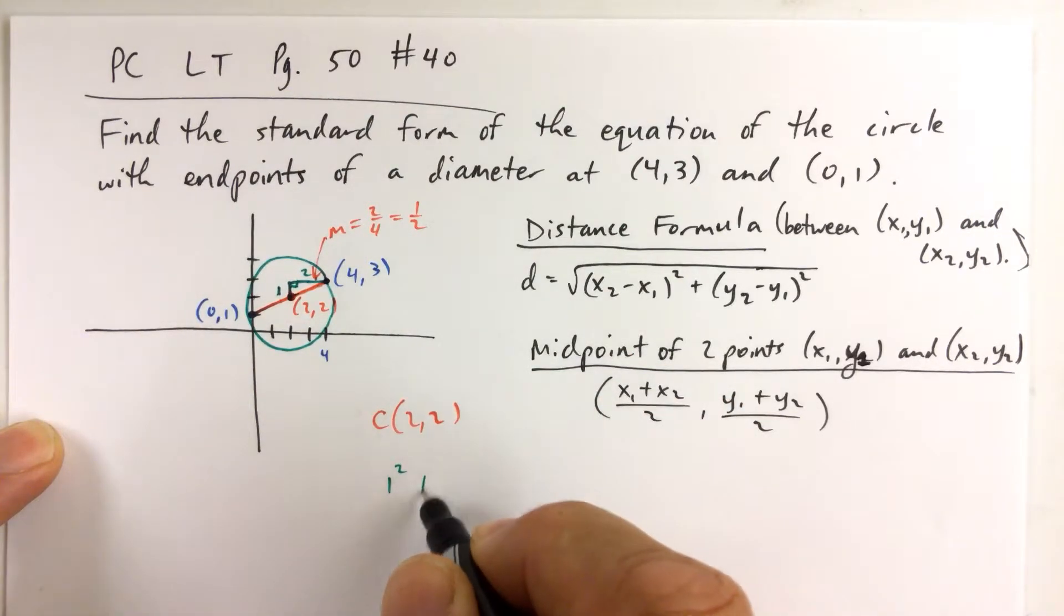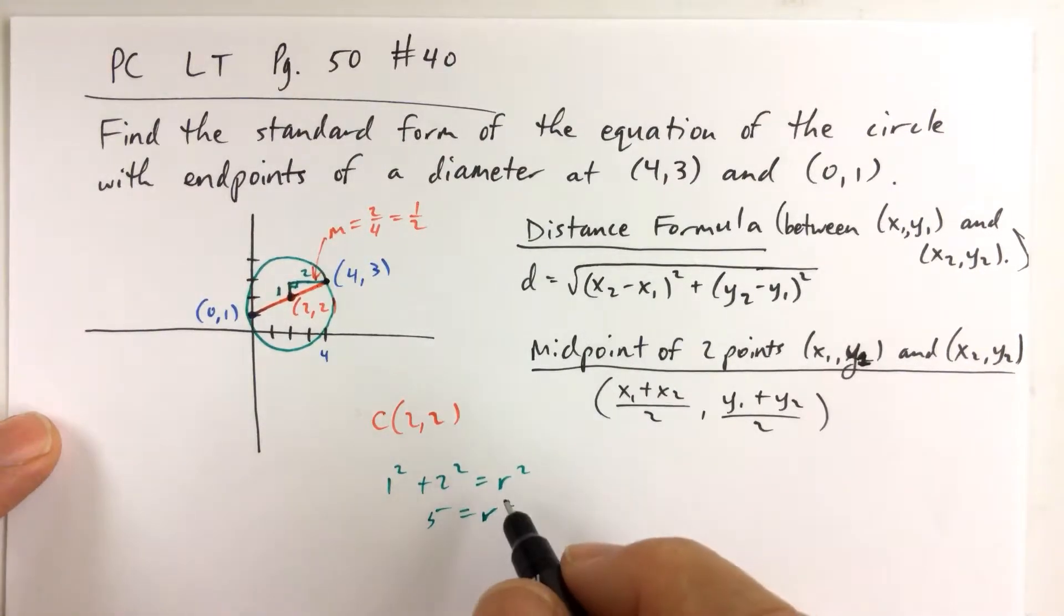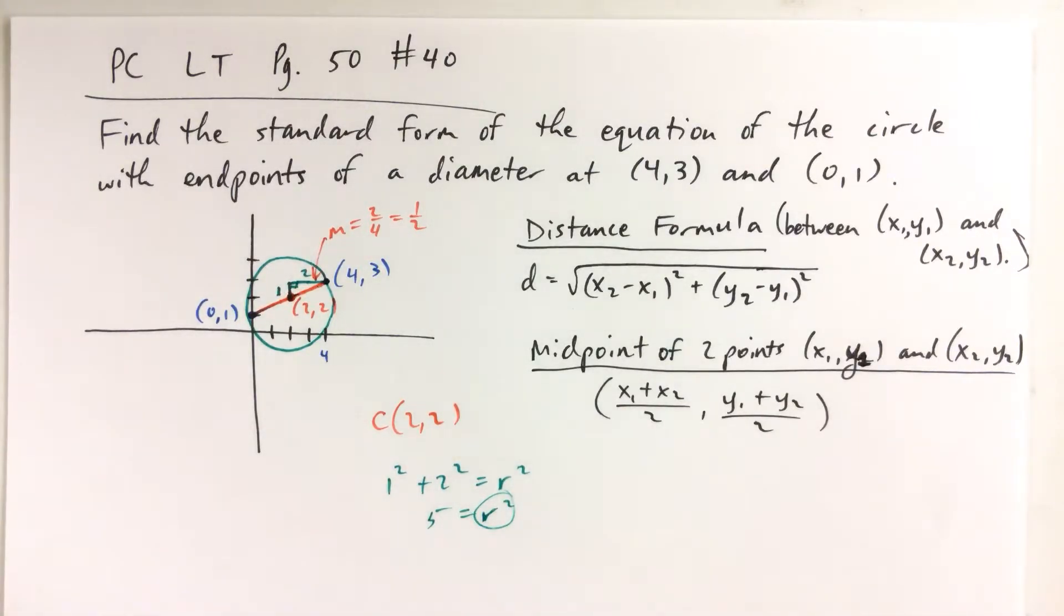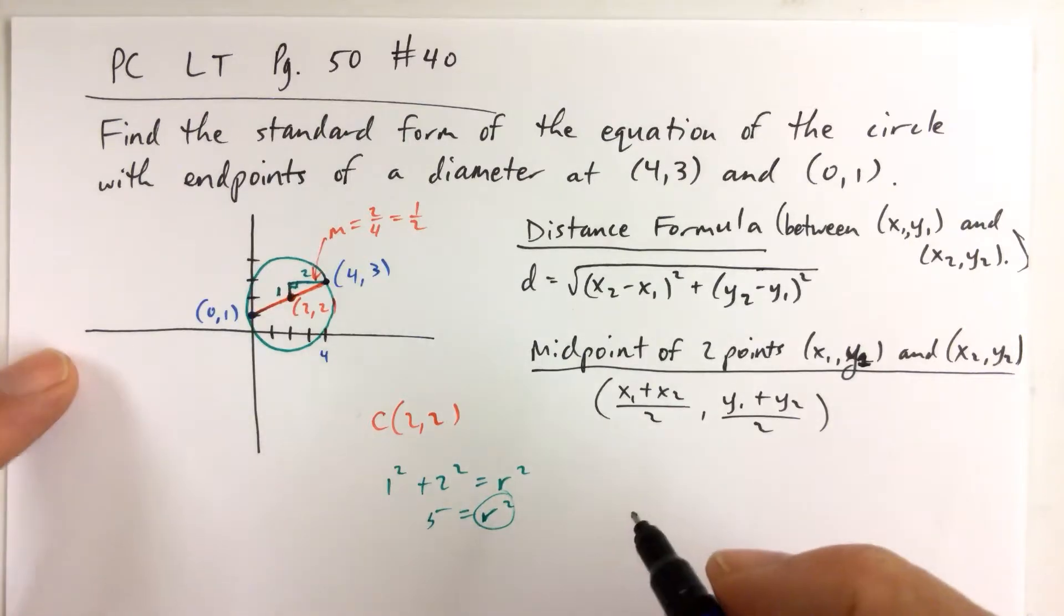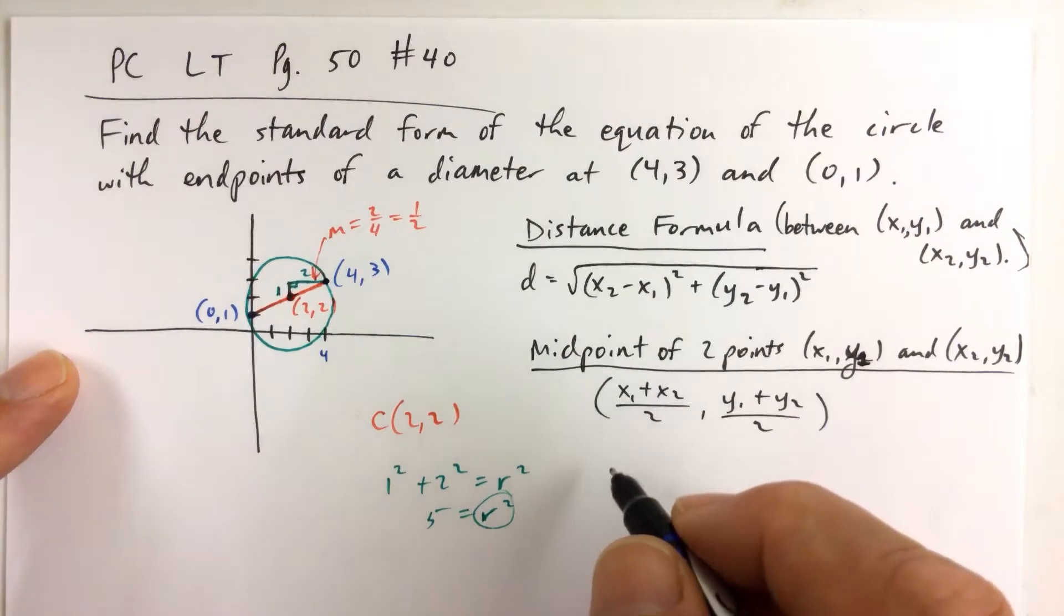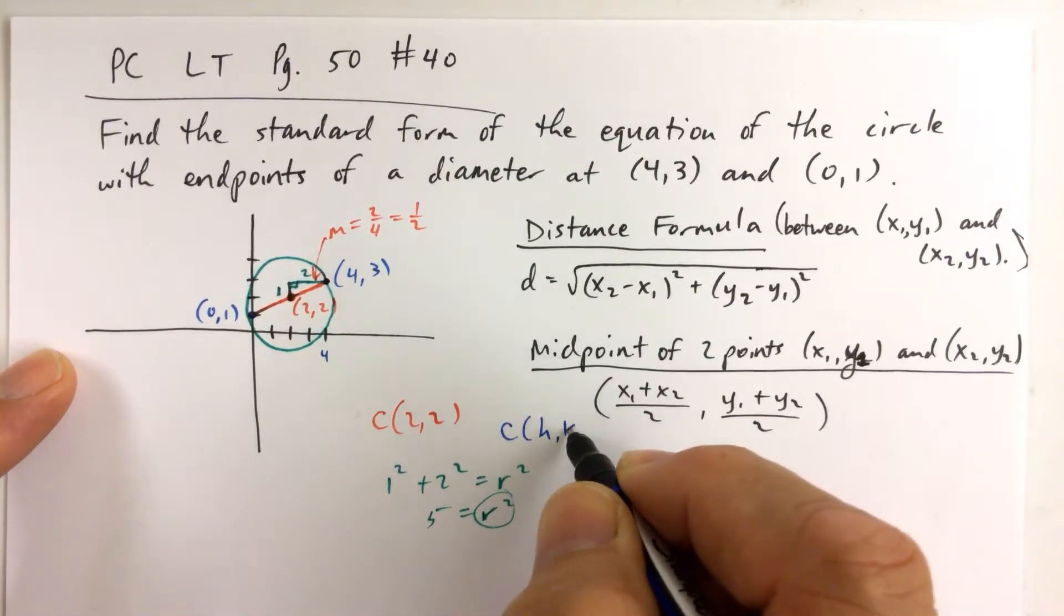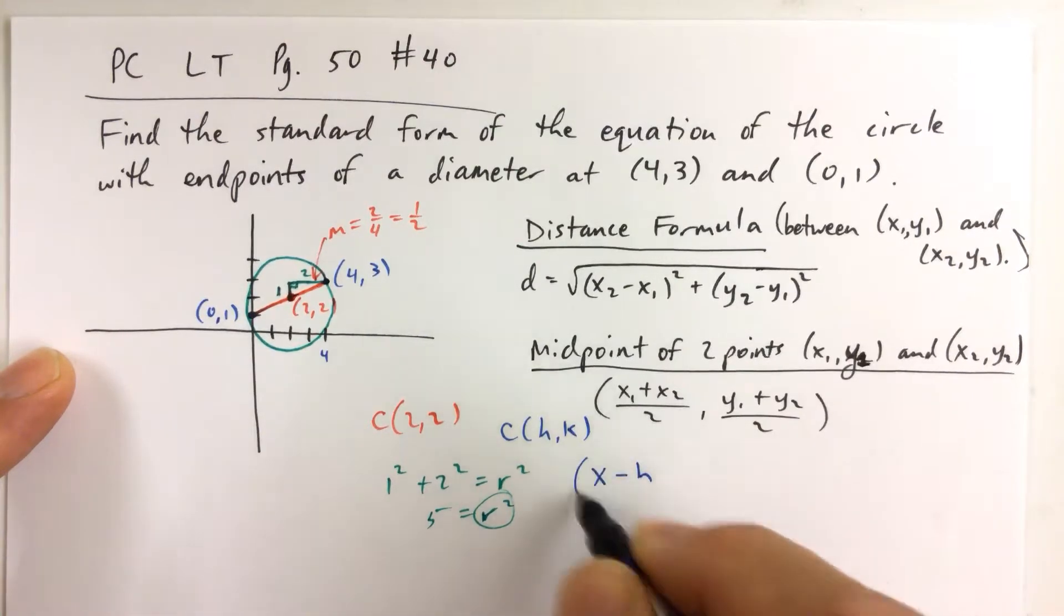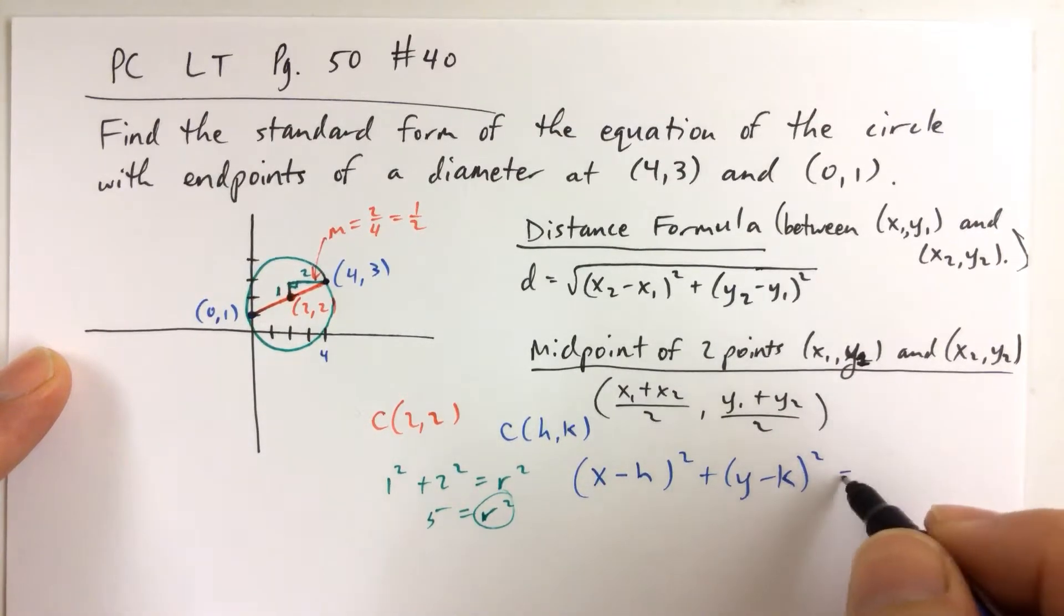We know that 1 squared plus 2 squared is equal to the radius squared, and 1 squared is 1, 2 squared is 4, so 1 plus 4 is 5. So the radius squared is 5, and actually we can leave it like that because we know that our equation of our circle, we need to substitute in something for r squared. The radius is radical 5, but the radius squared is 5. So let's just leave it at 5 because if you remember, the equation of a circle that has a center at (h,k) is (x - h)² + (y - k)² equals r².